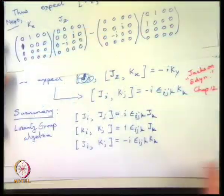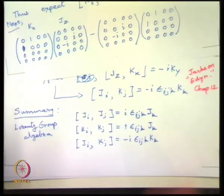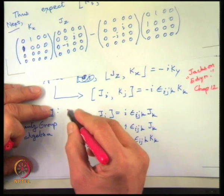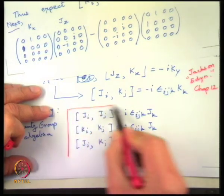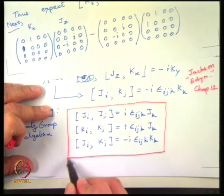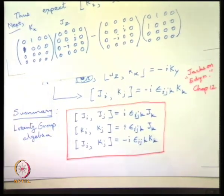So two boosts commute to give a rotation, but then a rotation and a boost produces a boost. Now let us try to understand physically why it is like this. This is the boxable result, and I hope that the signs in it are all correct.